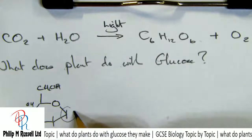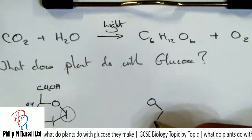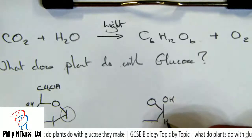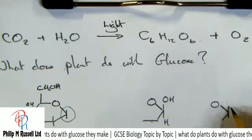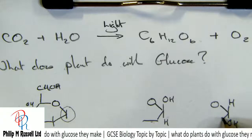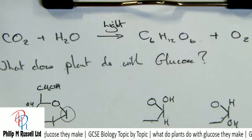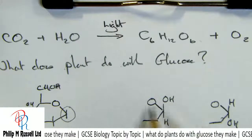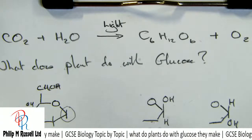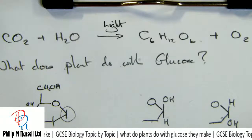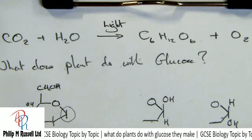The two forms are important. When we make glucose, we can either make it with the OH one way up or the other way up. They're called alpha and beta glucose. It doesn't alter really much about the glucose itself, but it makes a difference when these molecules combine.